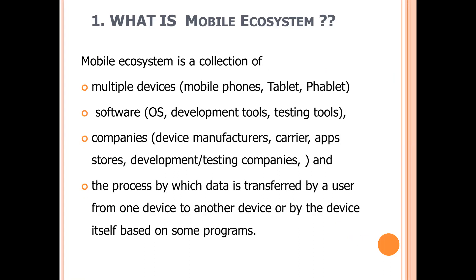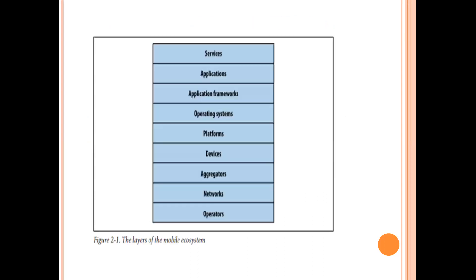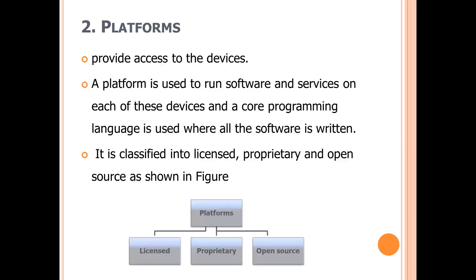And what are the companies involved? Device manufacturers, carriers, app stores, and development and testing companies. The process by which data is transferred by a user from one device to another device, or by the device itself based on some programs. The layers of mobile ecosystem services are: application, application framework, operating system platforms, devices, aggregators, networks, and operator.